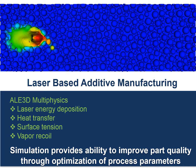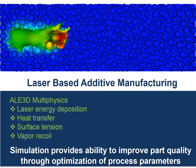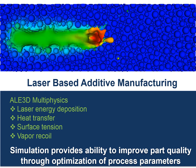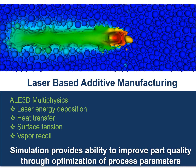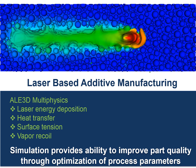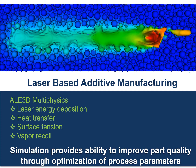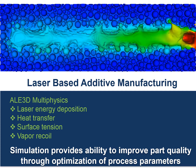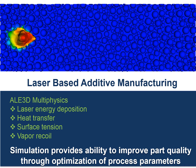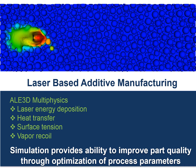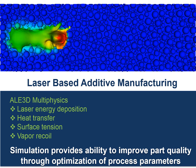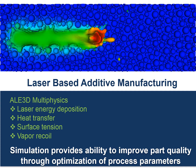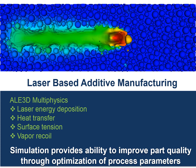A large effort recently has been developing AL3D to simulate laser-based additive manufacturing on the powder scale. These simulations require complex physics such as laser energy deposition, heat transfer, surface tension, and vapor recoil. These types of simulations help inform and discover the spattering that occurs with the process, as can be seen in this simulation. In addition, these simulations have been used to determine the process parameters needed for the best part properties, such as determining the optimal laser power and speed, as well as laser beam shape.